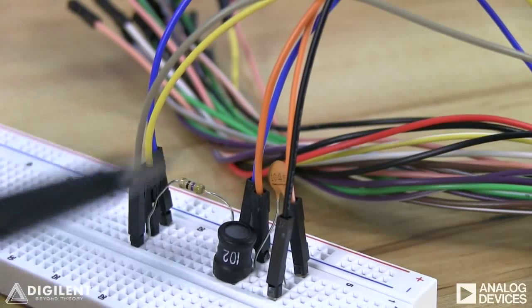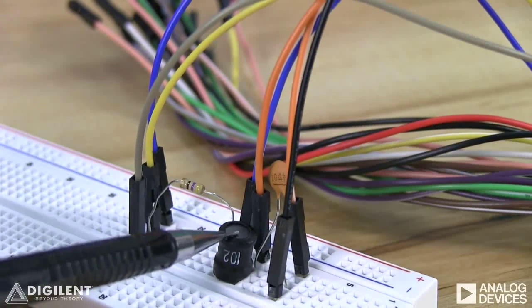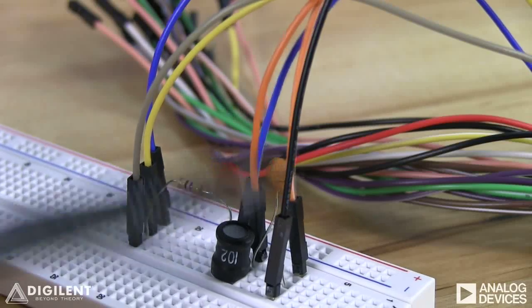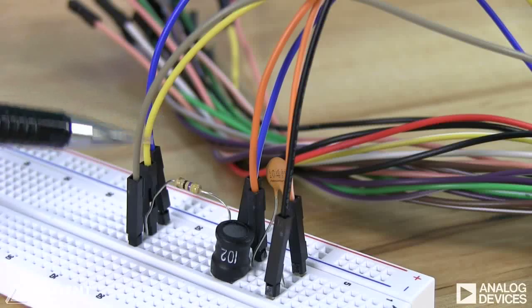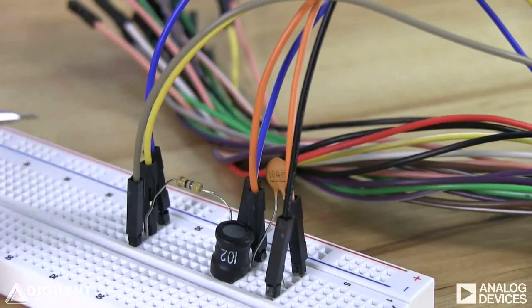Here's our circuit. This is our 47 ohm resistor, our 1 millihenry inductor, and our 0.1 microfarad capacitor. We're using channel one of the waveform generator to apply a voltage to this terminal of the resistor.